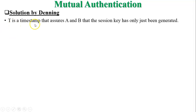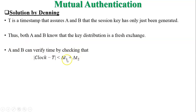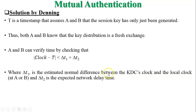Timestamp T shows both A and B that the session key was freshly generated by the KDC at time T. Both A and B know the key distribution is a fresh exchange. A and B can verify the time by checking the equation: clock − T < ΔT1 + ΔT2, where ΔT1 is the estimated normal difference between the KDC's clock and the local clock of the user, and ΔT2 is the expected network delay time.